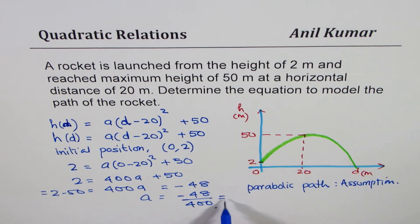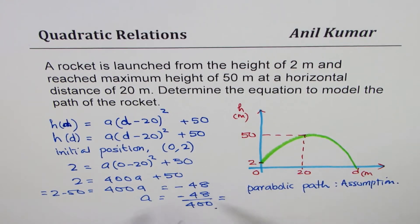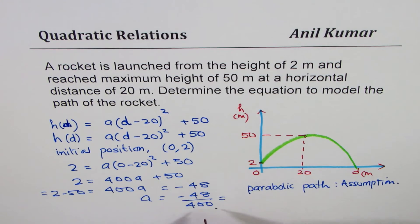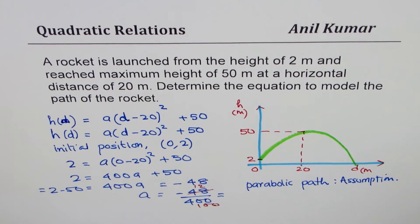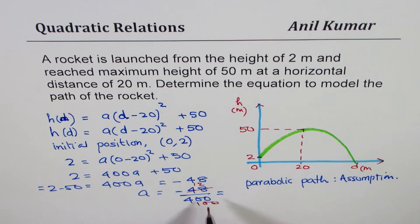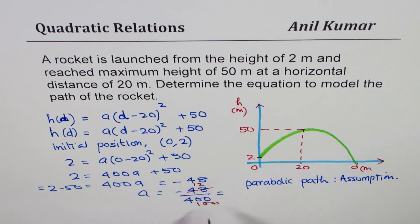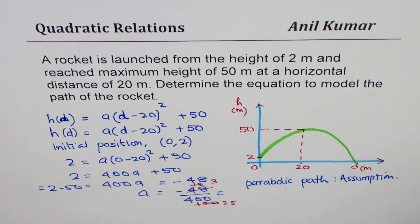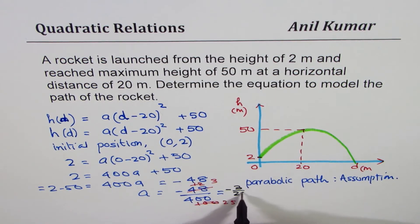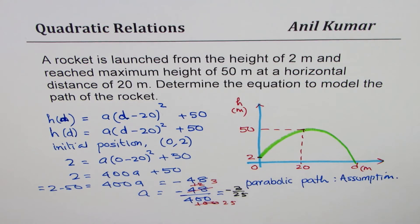We could simplify this dividing by—let's divide it. If you divide by 4, you get 12 and here you get 100. Let me push the page a bit. And now both can be further divided by 4, giving us 4 times 3 and this is 25. So what we get here is minus 3 over 25. The value of A is minus 3 over 25.